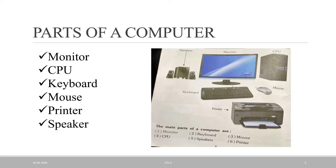This is a monitor — see my arrow moving on the monitor. This is our monitor. This is a keyboard. This is a mouse. This is the CPU box. This is a speaker. And the last one is a printer. I know you all are aware of these parts because you go to the computer lab and do typing and drawing there.